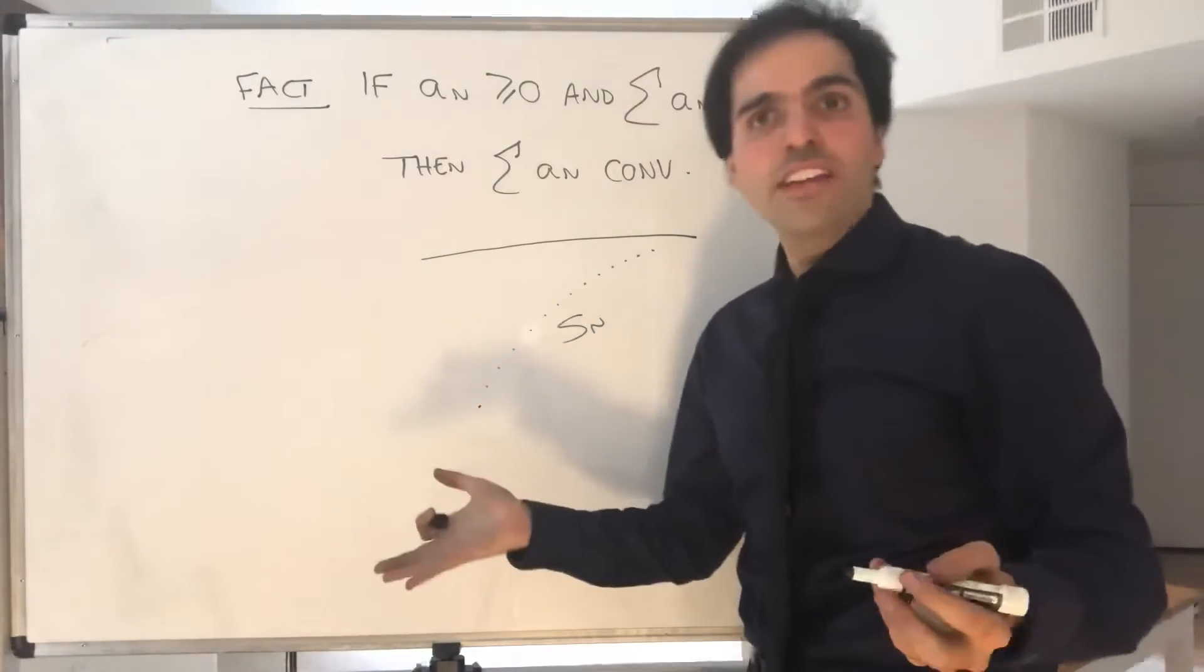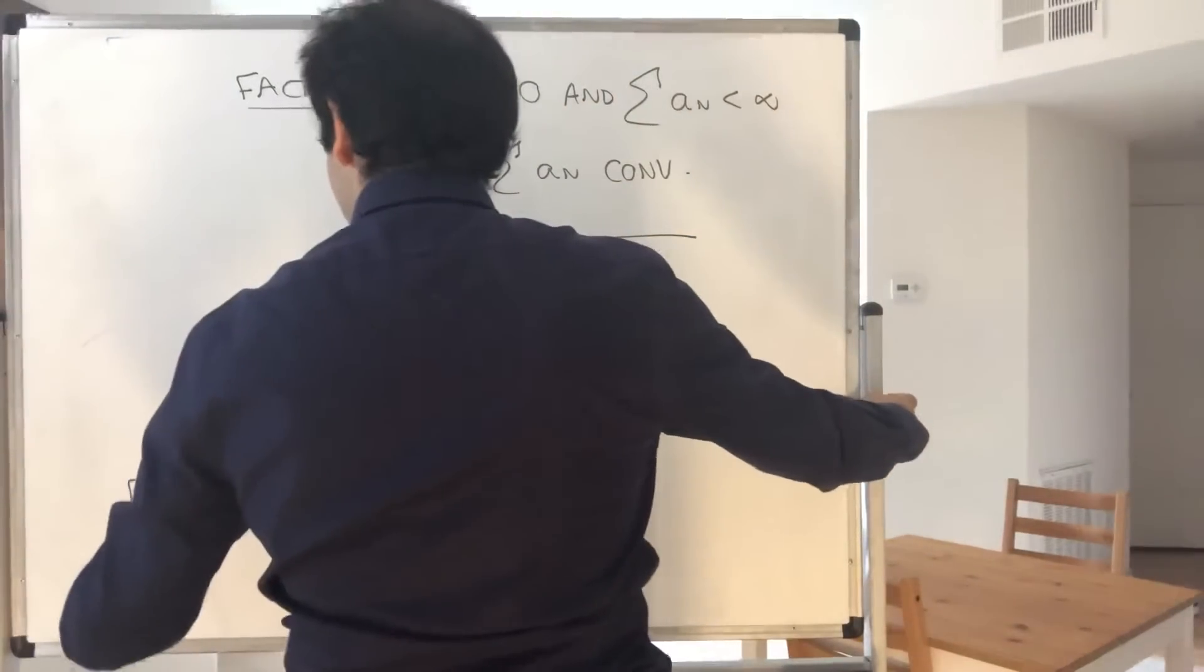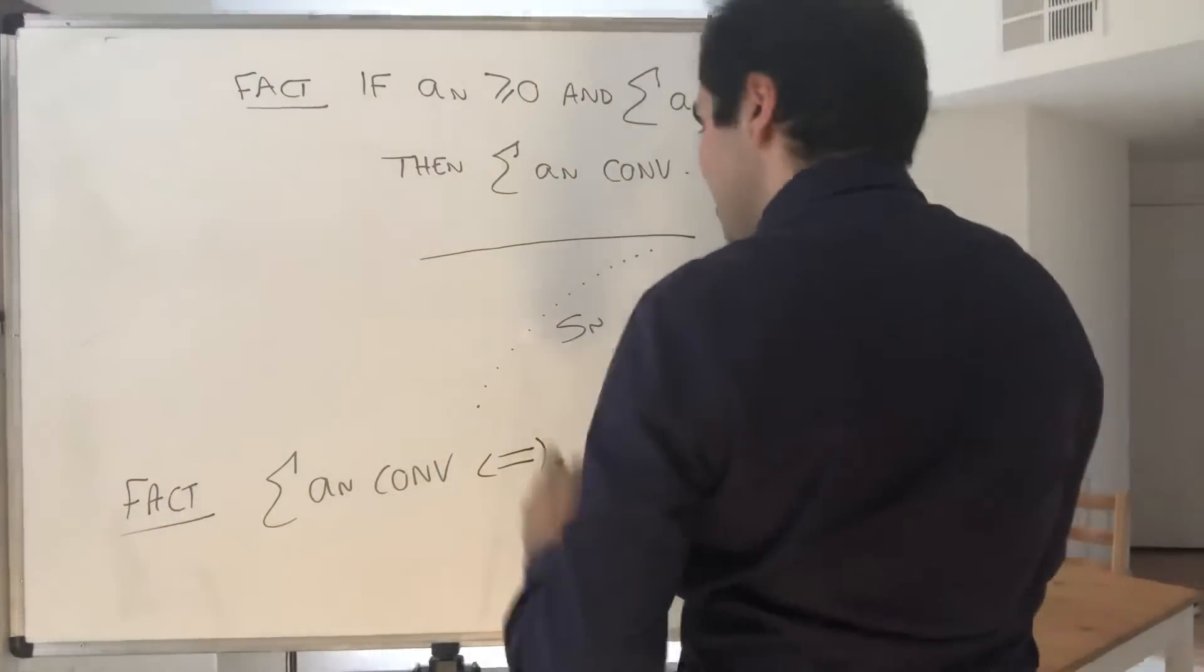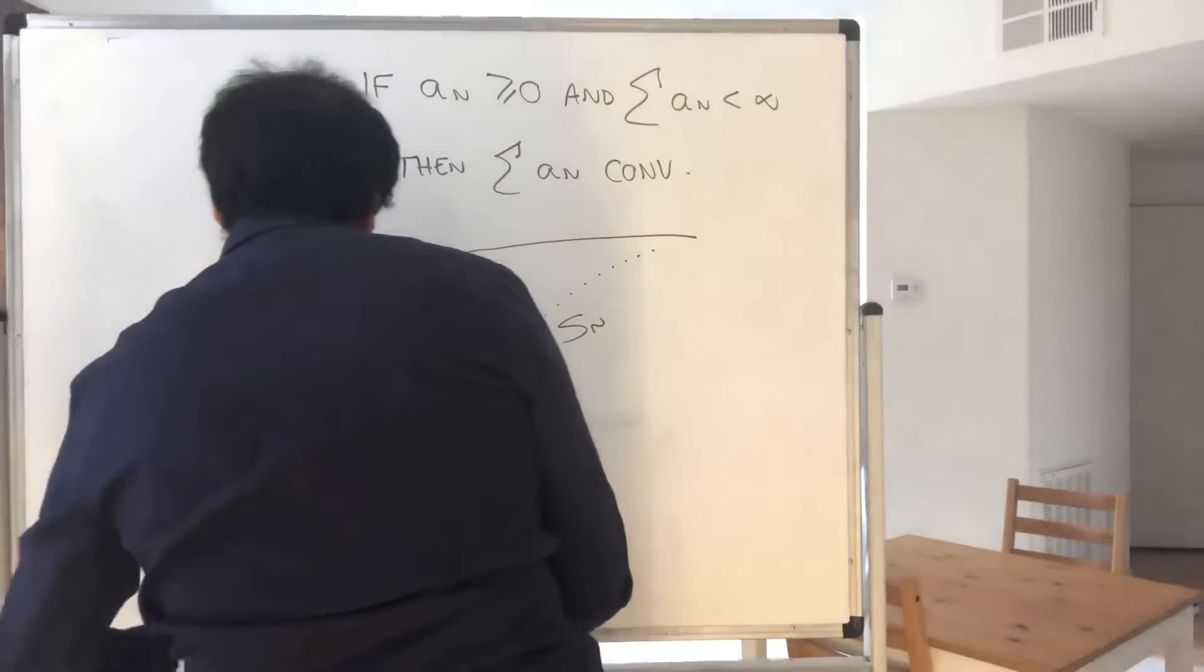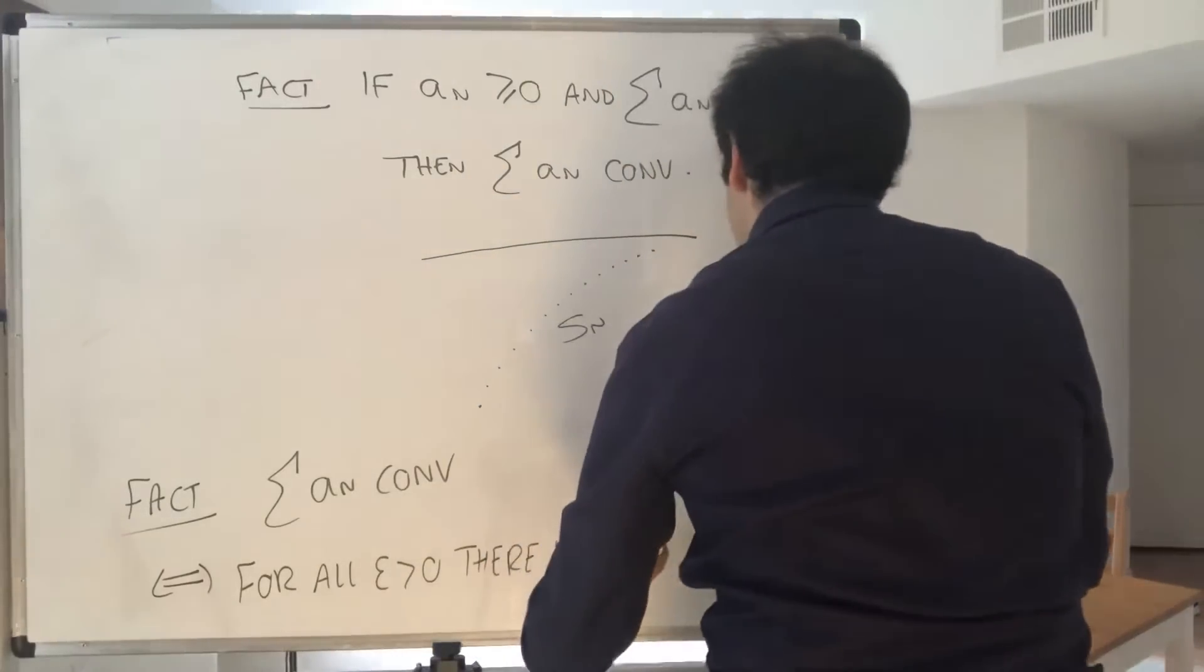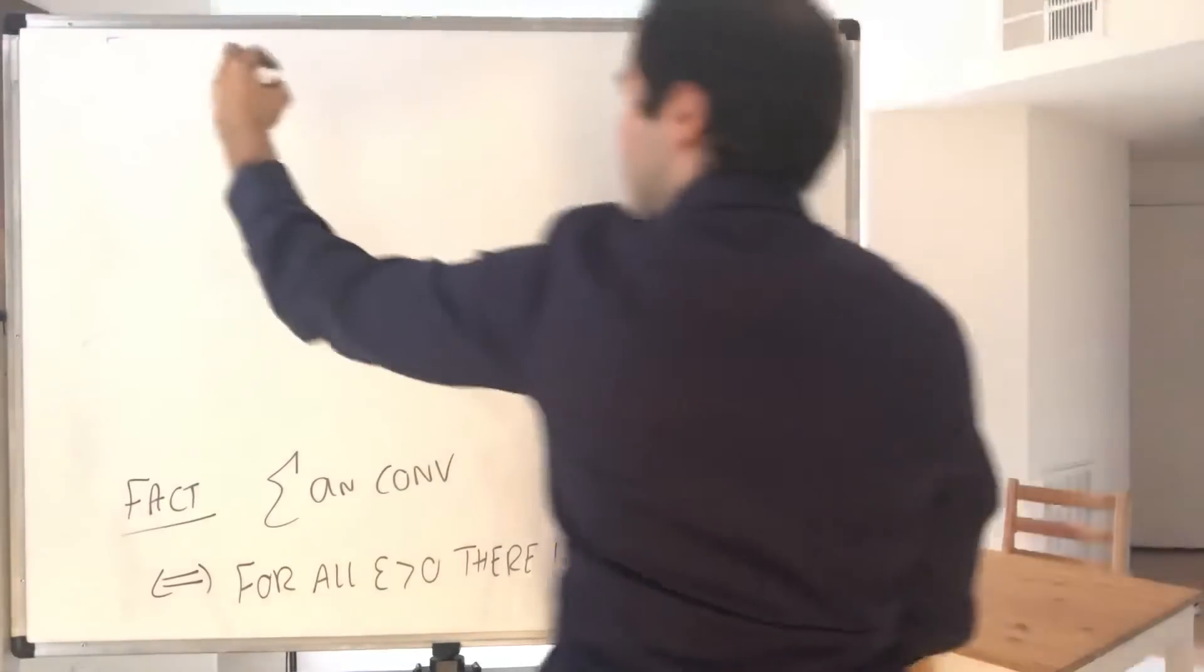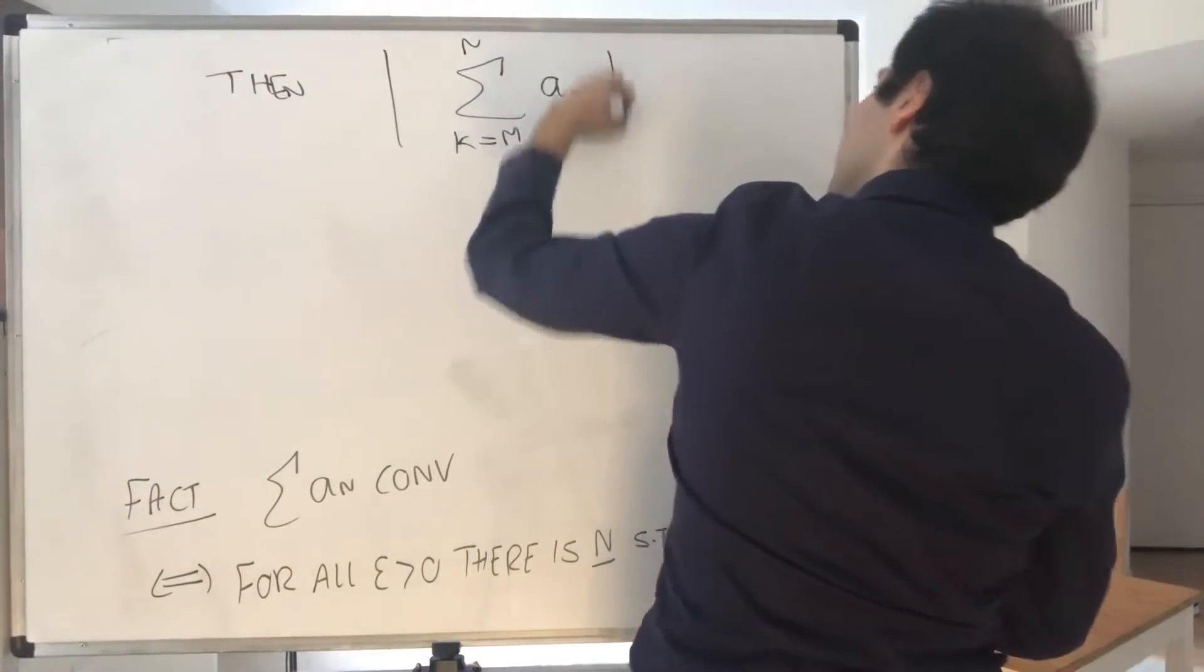And here's another fact that is very useful to prove a bunch of convergence tests, which is the Cauchy criterion, which says that a sequence converges if and only if its tails are arbitrarily small. And what does that mean? It means that, for all epsilon, if and only if, for all epsilon, there is some threshold, capital N, such that, if N ≥ M > capital N, then the sum from M to N is arbitrarily small. The sum from k=M to N of a_k is less than epsilon.